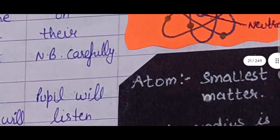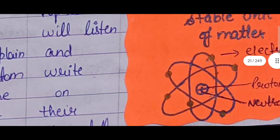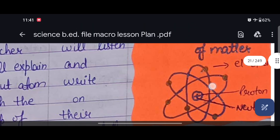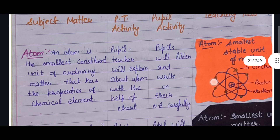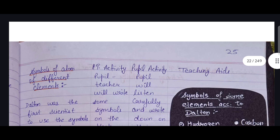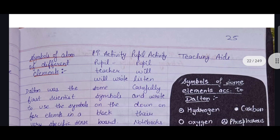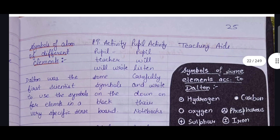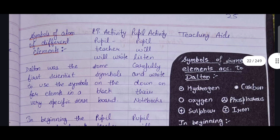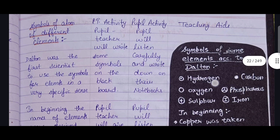You can see on the chart: what is an atom, its structure. Then there is blackboard work written by the teacher. The next subject matter covers symbols of atoms of different elements, followed by PT activity and pupil activity — students will listen carefully and write in their notebooks. Teaching aid here is the blackboard.